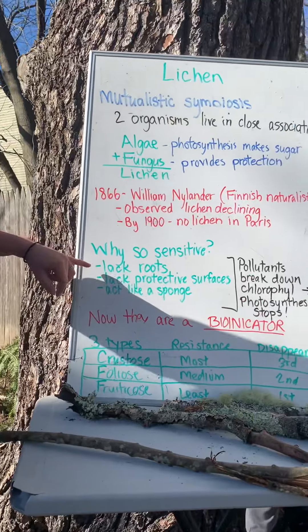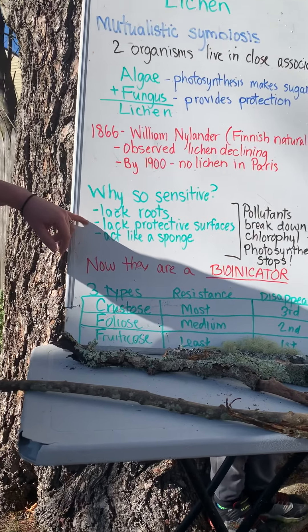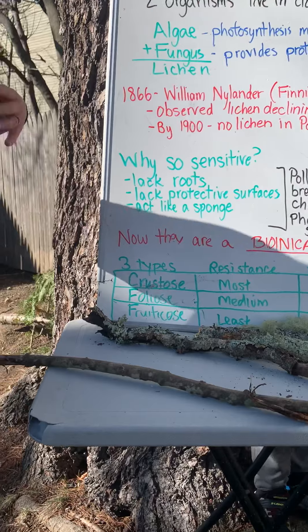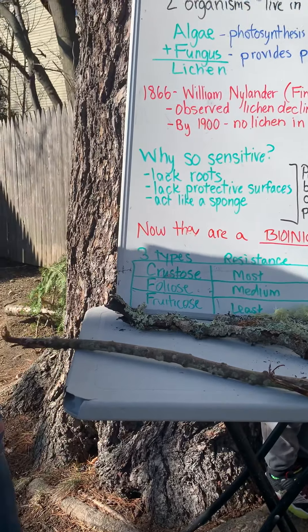Lichen is actually a really interesting combination of two organisms. It's a combination of algae and fungus living together. The algae perform photosynthesis, which helps them make sugars that feed the fungus, and the fungus provides protection for the algae. Together they work in a relationship called symbiosis — they both benefit, so it's called mutualism or mutualistic.